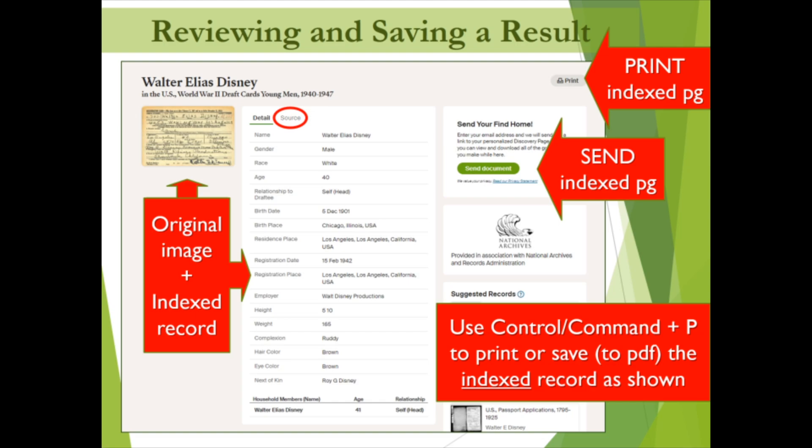This slide shows the information initially displayed when we selected the World War II draft card entry from the results of our Walter Disney search. Please note three things. Number one: the indexed result shown here includes the image of the original document in the top left, which you can open and view in Ancestry Library Edition. While the indexed, non-handwritten version is easier to read, you should always take advantage of the opportunity to read the original for additional information and possible errors in the indexing process.